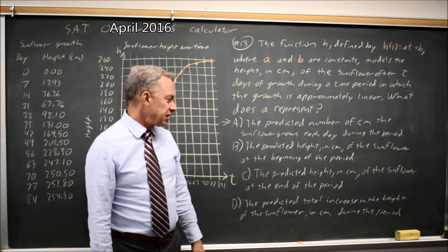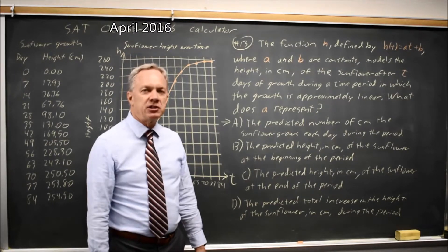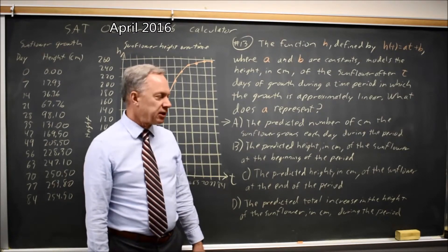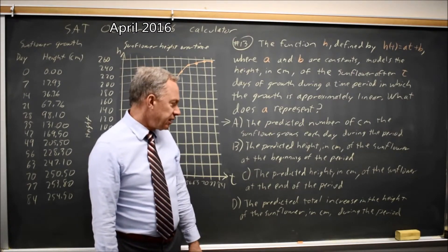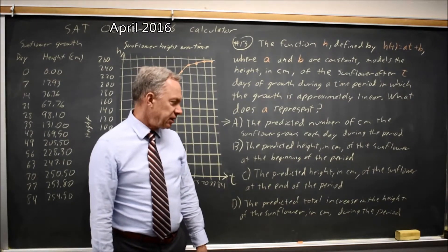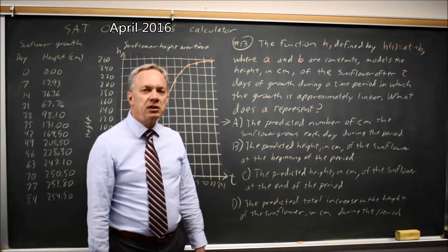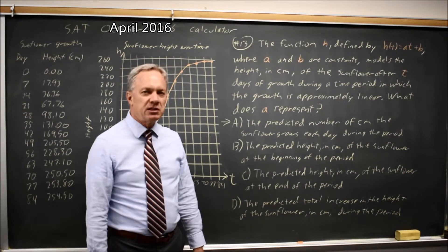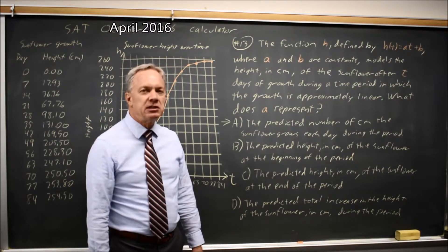Predicted height in centimeters at the end of the time period would be h of t for t equals the ending time. And predicted total increase in height during the period would be your slope times the number of days in that time period. So b, c, and d are not correct.